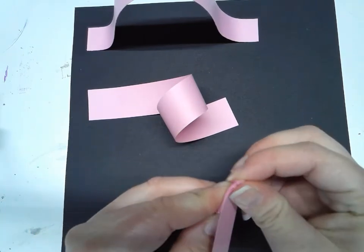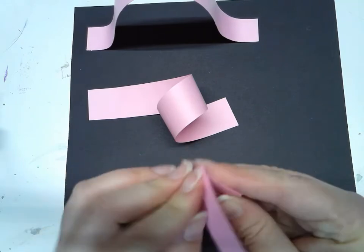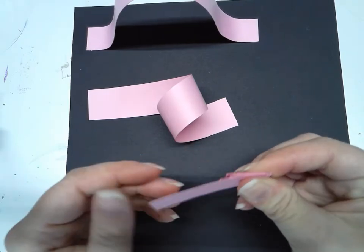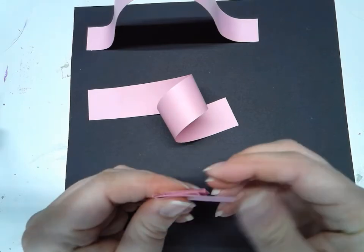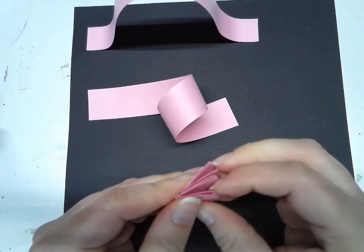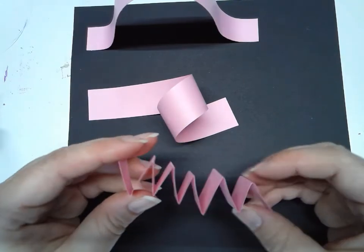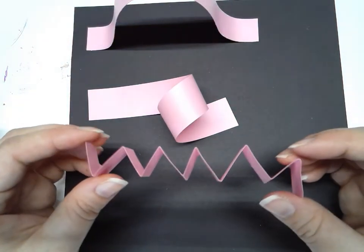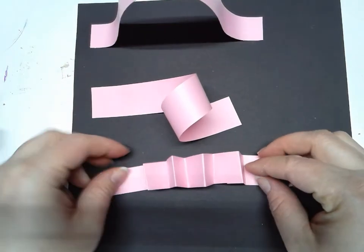Then fold it back again. Just keep going back and forth until you get all the way to the end. When I open it up, it looks like a spring. Now I can glue my two ends down.